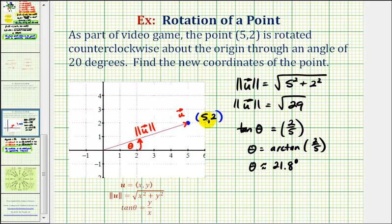Now to find the coordinates of the point that's rotated 20 more degrees counterclockwise, we'll rotate this red vector 20 degrees counterclockwise and then find the terminal point of the new vector. So if we rotate this red vector 20 degrees counterclockwise, it might look something like this.